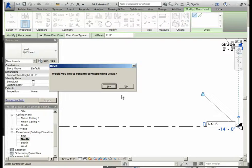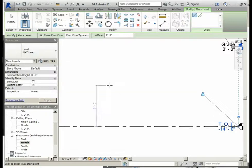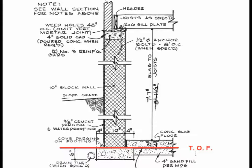We rename the level to TOF — the acronym TOF stands for Top of Footing — and press Enter. When asked 'Would you like to rename corresponding views?' we will select Yes. Another level that will need to be created is to identify the ceiling that is in the basement.